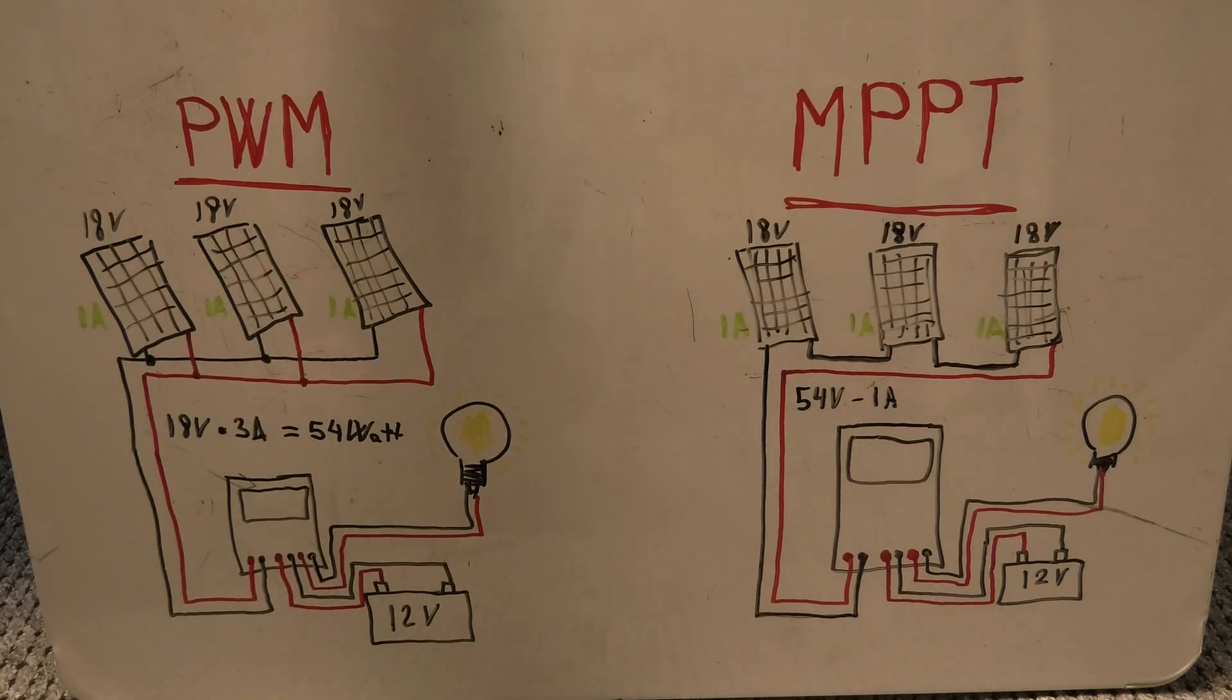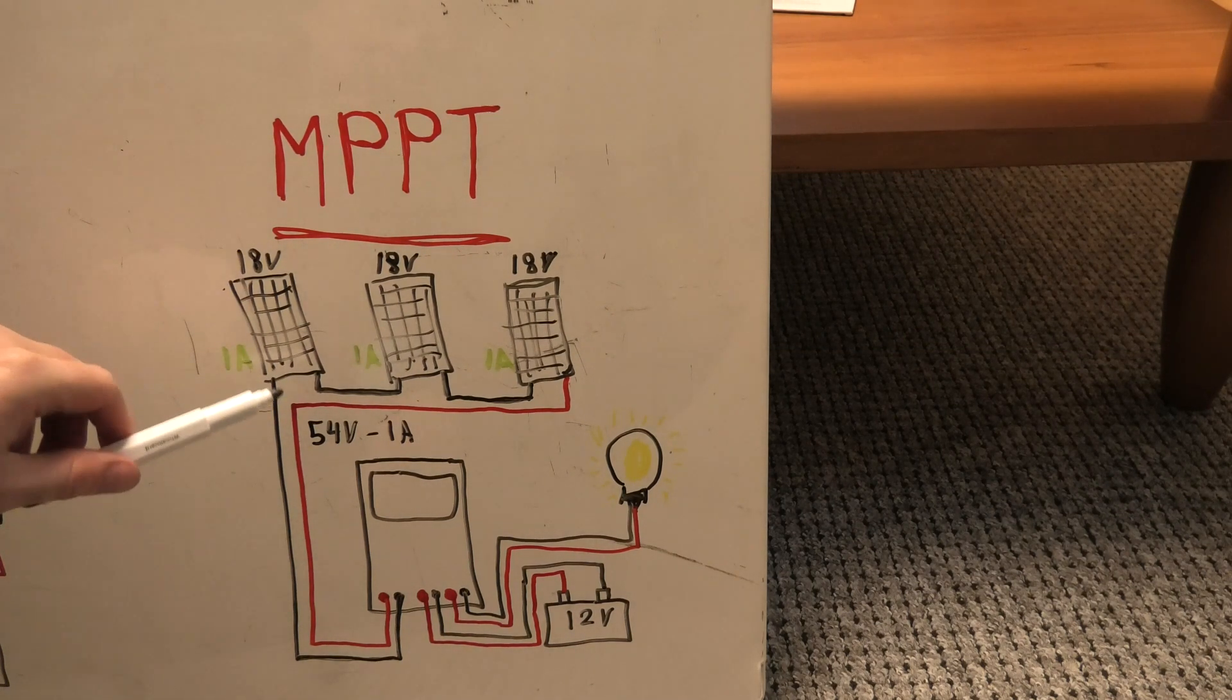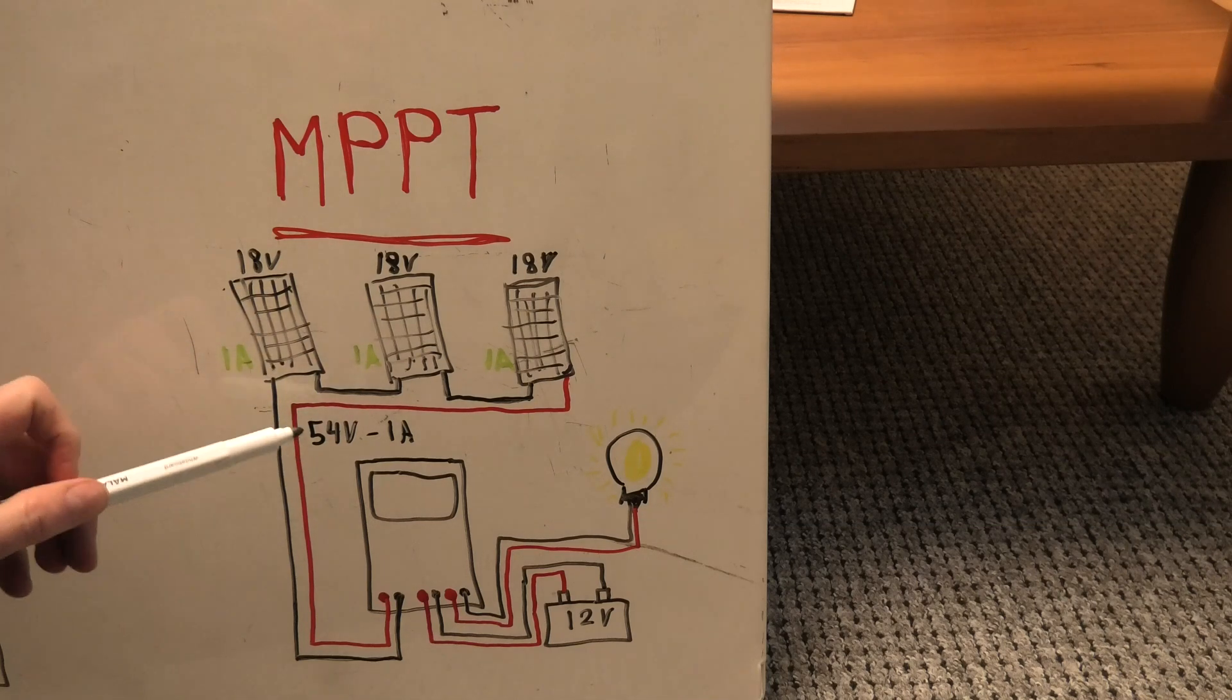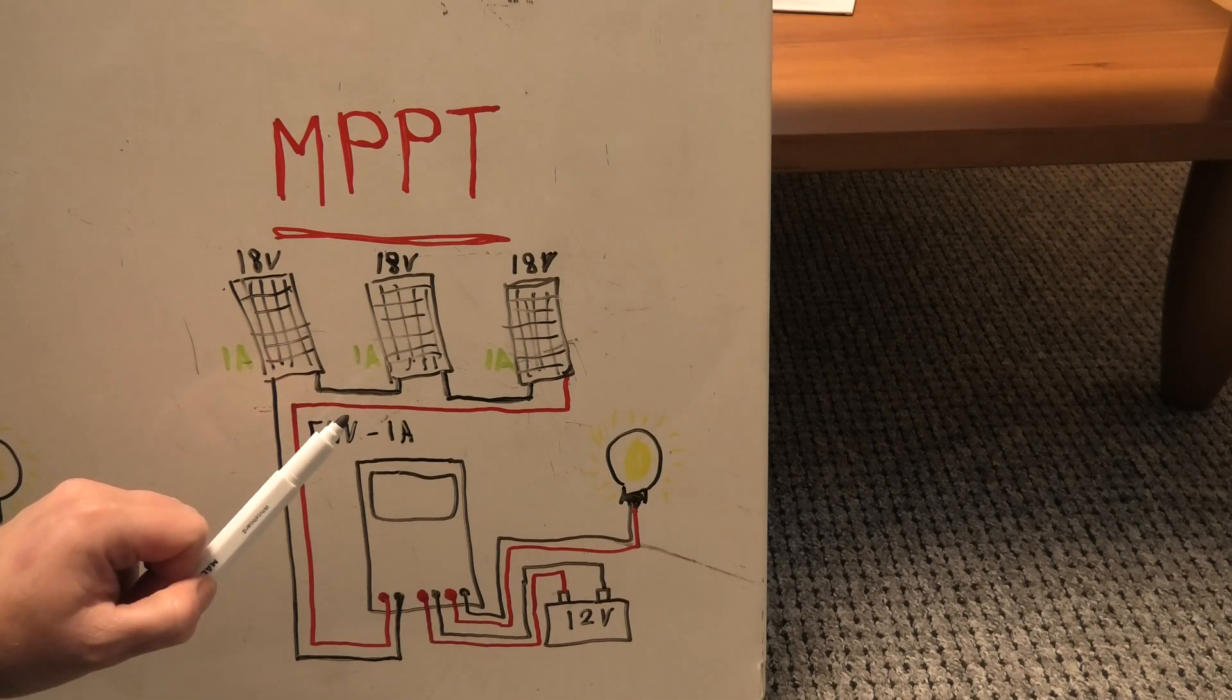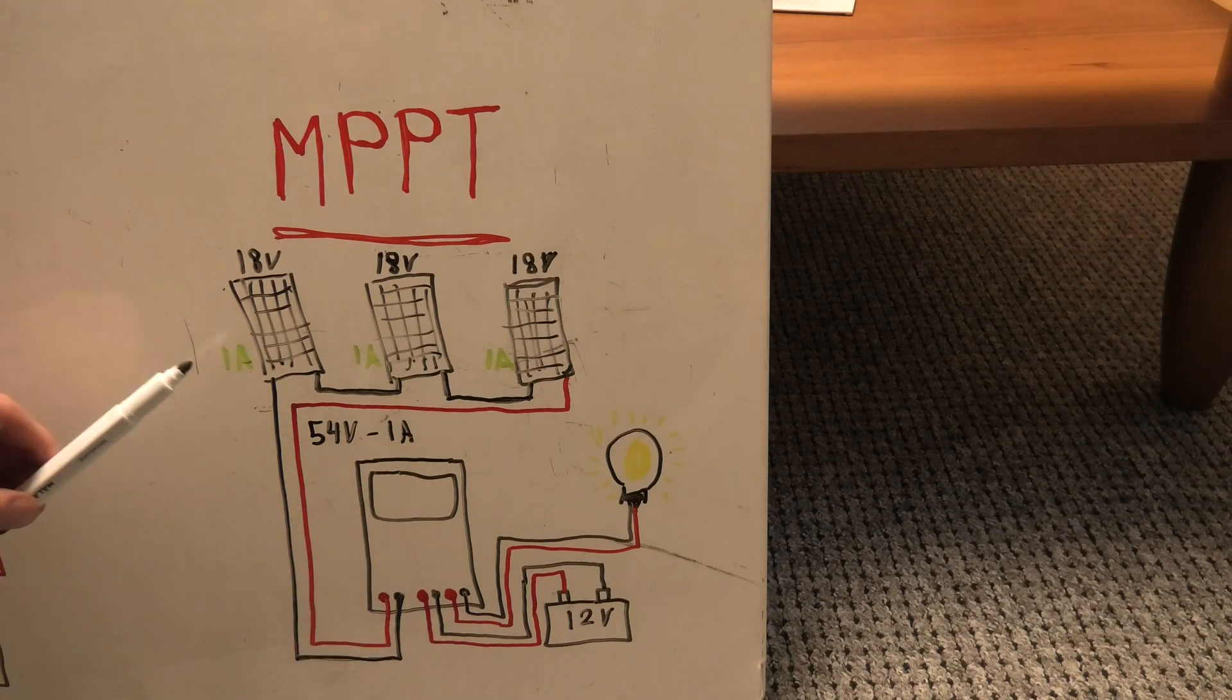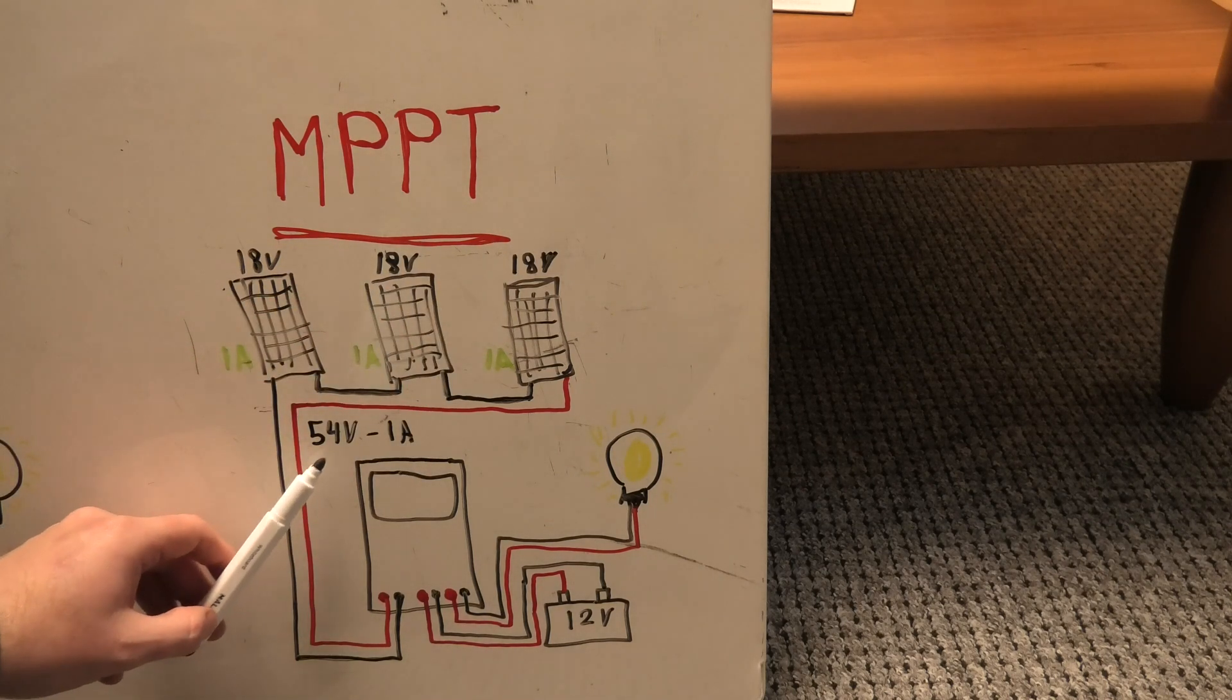So over here, we have the MPPT charge controller, and it does it a little bit differently. It is able to take in a higher voltage than what it's charging the battery with. So this is a 12-volt battery. But I've taken these 18-volt cells, and I put them in series instead of parallel, which they were over here. So in this setup, we get higher voltage, but the amps stay the same. That's the difference between series and parallel with solar panels. So when we put them in series, the voltage goes up, and when we put them in parallel, the amperage goes up. So we have one amp on each of these solar panels, and we have 18 volts, and that becomes 54 volts, 1 amp.